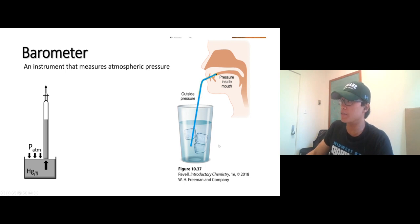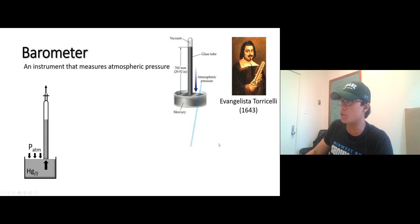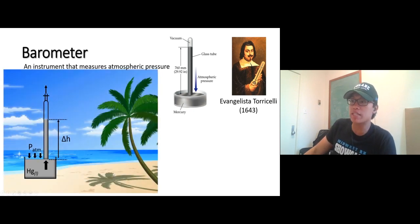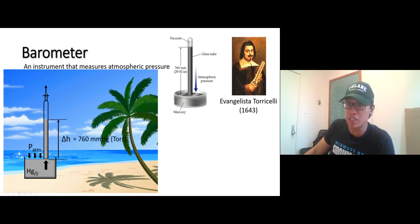This is a smart way to make the barometer by Torricelli. The height where mercury travels tells you the atmospheric pressure. At sea level, this height is exactly 760 millimeter mercury. We call it millimeter mercury because the liquid we use is mercury.